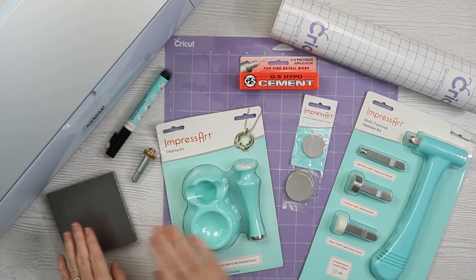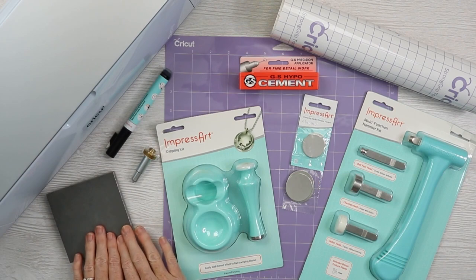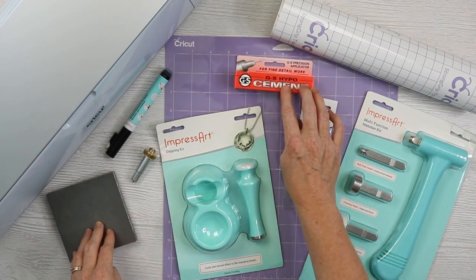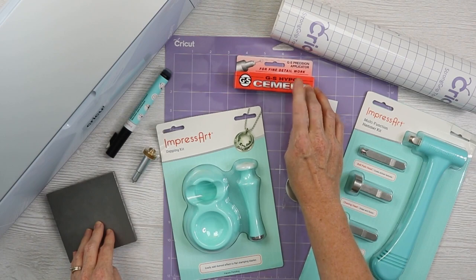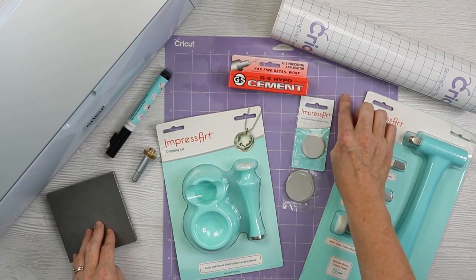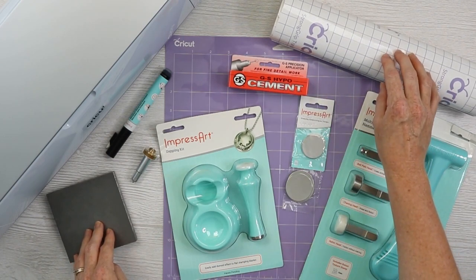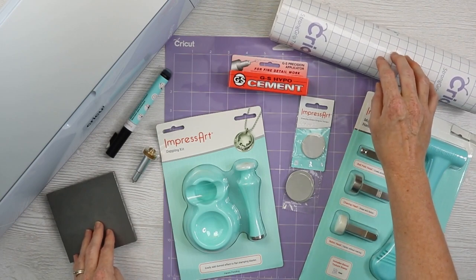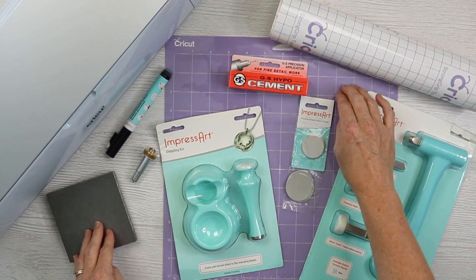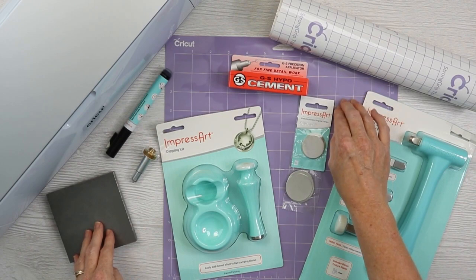And to do that, you will need a stamping block and some type of adhesive. I recommend this GS Hypo Cement, and I'll link to that below. Then you'll need a strong grip mat, as well as strong grip transfer tape, because we're going to try a little something different to hold these on the mat in order to get our engraving.